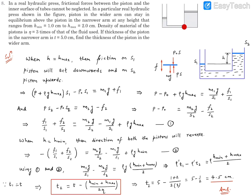This is a hydraulic press, but more real — we are considering the frictional forces. I have drawn the same picture, and the gap between the two pistons is H, ranging from H minimum to H maximum. For any piston, the forces acting are: gravitational force due to its own weight, atmospheric pressure force from outside, pressure force from inside the liquid, and friction at the contact point with the walls. This friction can be either upward or downward on the two pistons.